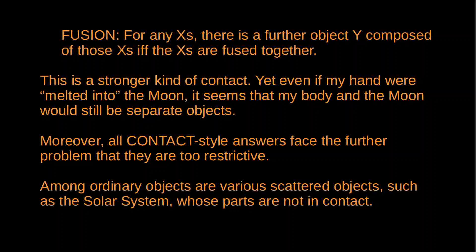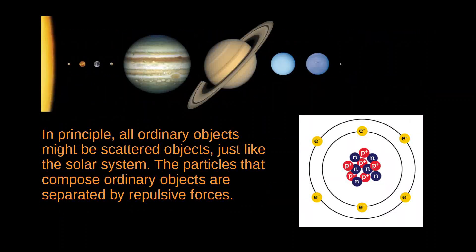Among ordinary objects there are various scattered objects whose parts do not contact other parts. Consider the United States: we ordinarily think it exists, but Alaska and Hawaii are separated from the mainland. Or consider the solar system: planets, asteroids, and comets are separated by millions of miles, but it's natural to think of the solar system as an object — force acts across it but there's no material contact. Indeed, on current physical theory, subatomic particles like protons and electrons do not come into contact — they're separated by repulsive forces. The distance between the nucleus and the electron in an atom is analogous to the distance between planets in the solar system. So maybe it turns out that all ordinary objects are mostly empty space — they are scattered objects.